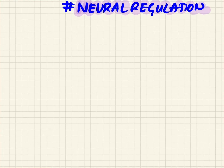Today we're covering the confusing topic of neural regulation of respiration. Respiration cannot happen on its own — it has to be regulated in different conditions like hypoxia, apnea, dyspnea, and scuba diving. So let's see how this neural regulation happens.